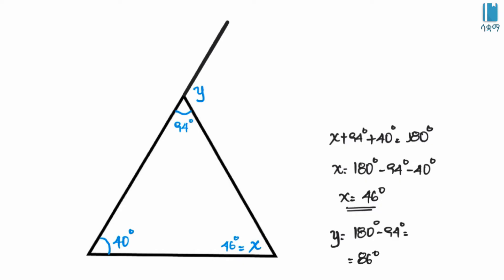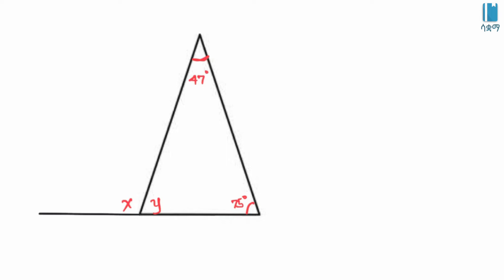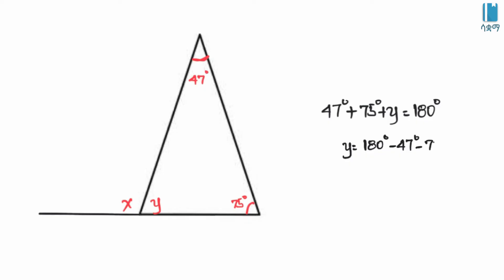Y is equal to 86 degrees. Let's find out and prove it. The sum of the interior angles of the triangle is 180 degrees. We have 47 degrees plus 75 degrees plus Y is equal to 180 degrees. Y is equal to 180 degrees minus 47 degrees minus 75 degrees.